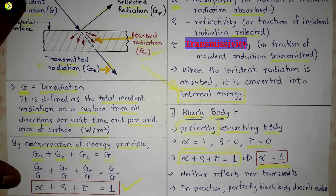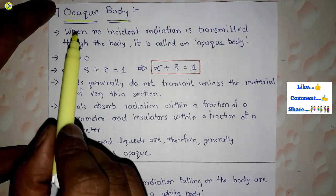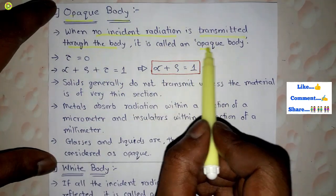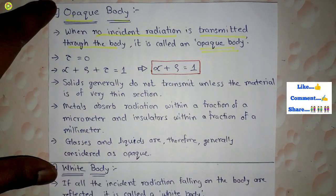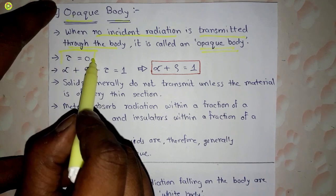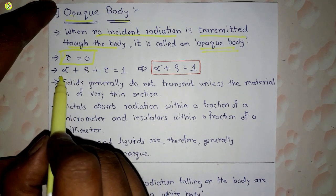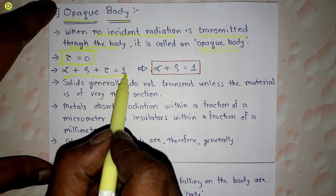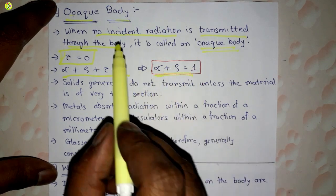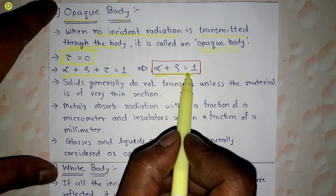An opaque body is one through which no incident radiation is transmitted. For an opaque body, τ = 0. Putting τ = 0 into α + ρ + τ = 1, we get α + ρ = 1. That is, absorptivity plus reflectivity equals 1 for an opaque body.